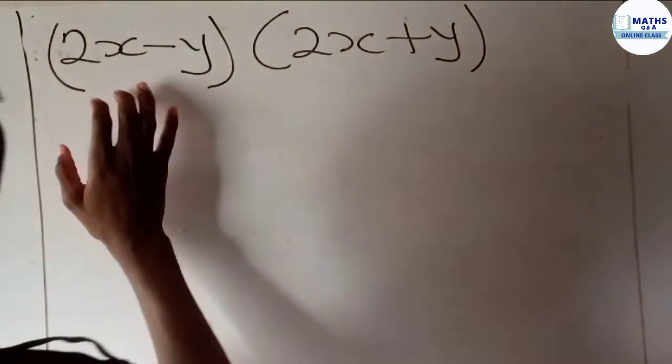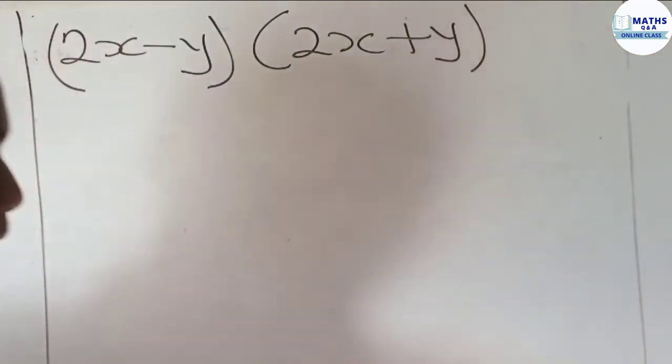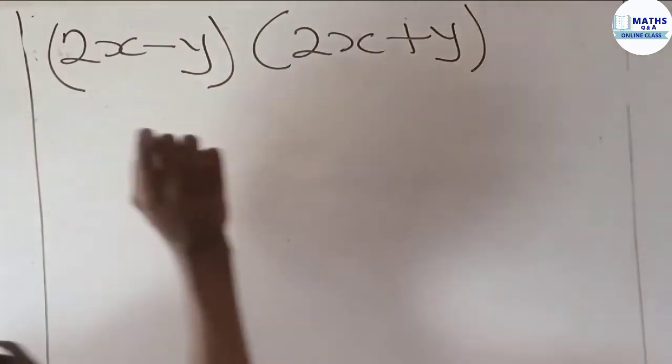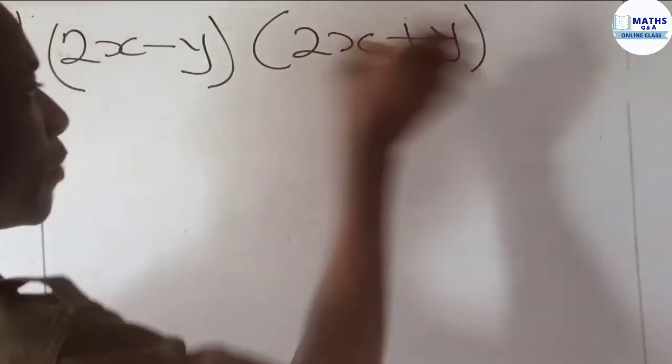Now we have to expand and simplify (2x - y)(2x + y). What we're going to do is take one term from this bracket and multiply by each term in this bracket.